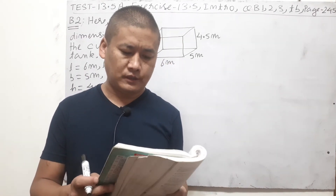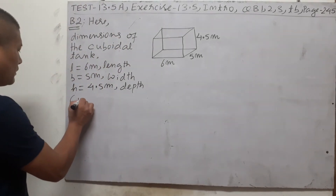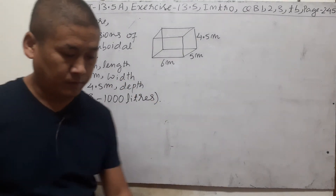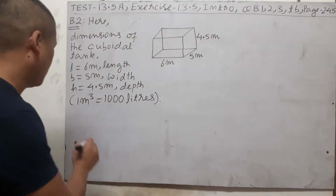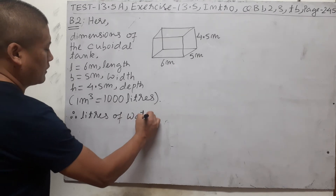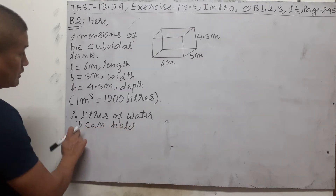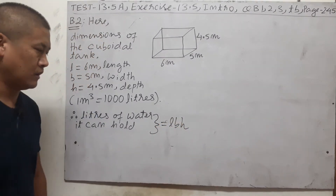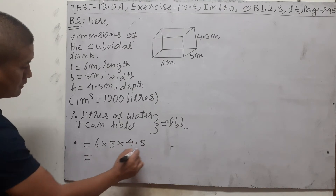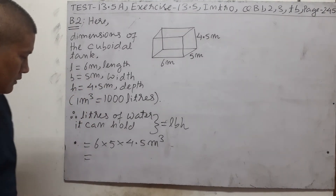The question asks how many liters of water it can hold — so we must express volume in liters. The question gives us that 1 meter cube = 1000 liters. Volume of liquid the tank can hold = L × B × H = 6 × 5 × 4.5 meter cube.